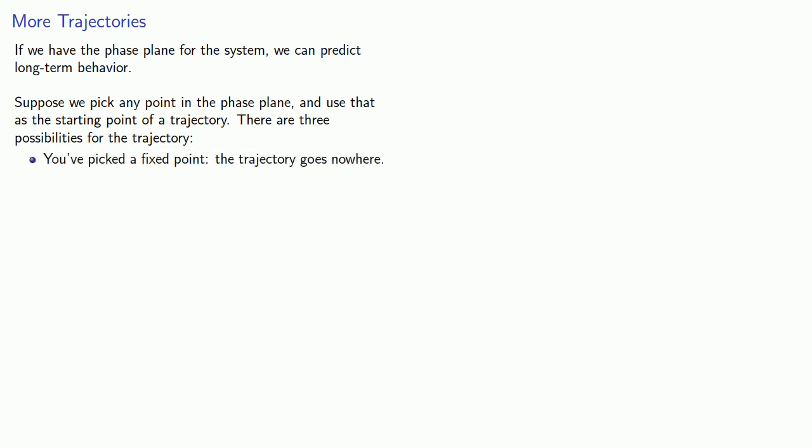First, maybe you've been fantastically lucky and you've picked a fixed point and the trajectory goes nowhere. Second, maybe you've picked a point where the trajectory starting from that point will go off to infinity. Or maybe the trajectory goes towards a fixed point. So as far as long-term behavior of this point is concerned, we might care about whether we are at a fixed point and go nowhere, whether we go off to infinity, or whether we go towards a fixed point.